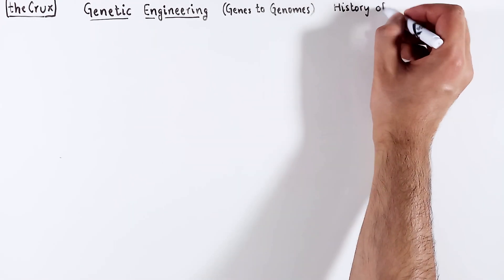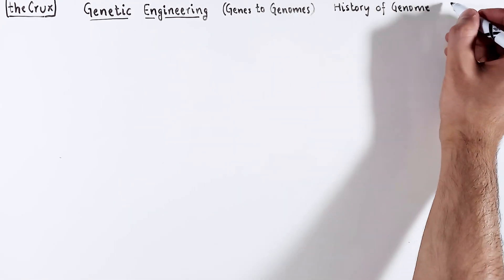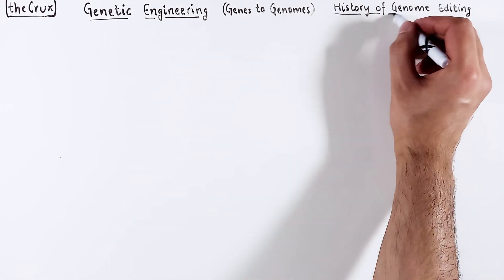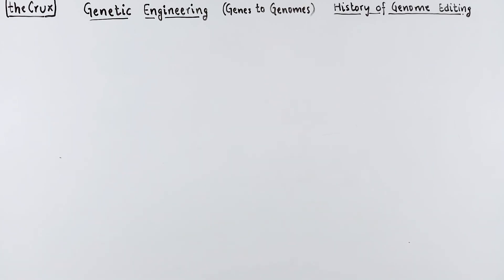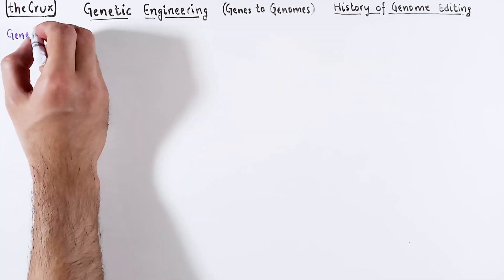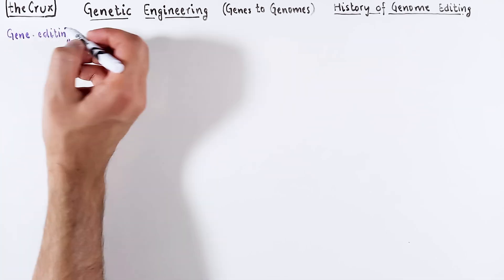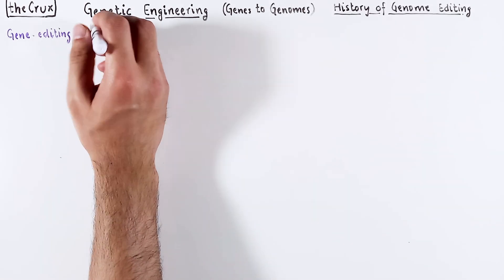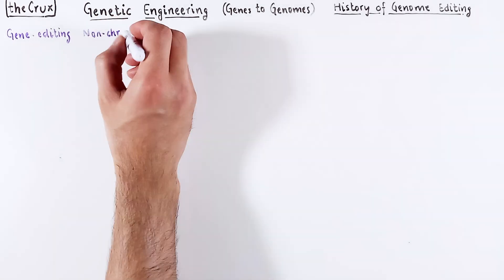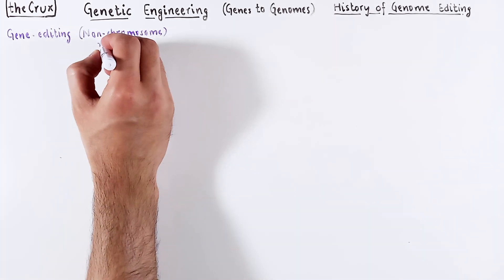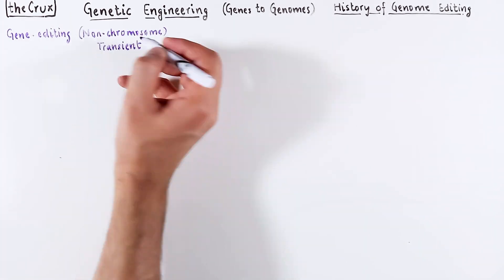The history of genome editing is not a singular timeline. At its conception, it does rely on gene editing — the timeline where non-chromosomal nucleic acids are manipulated and transient expression of a gene is achieved.